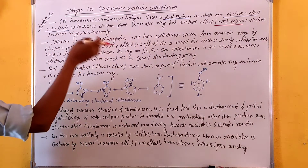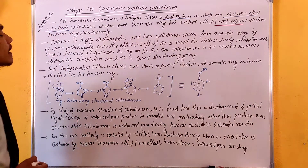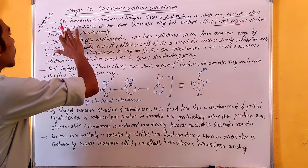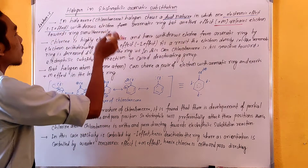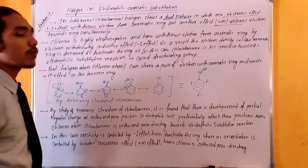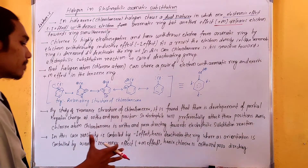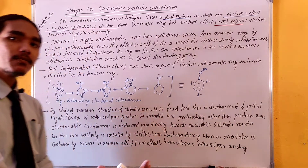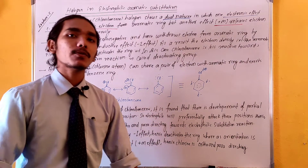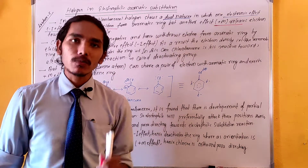The minus I effect means it withdraws electrons — it withdraws electrons from the aromatic ring. In this way, it acts as an electron-withdrawing group.